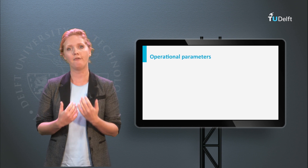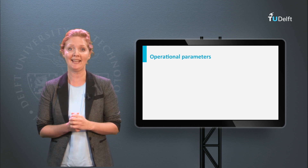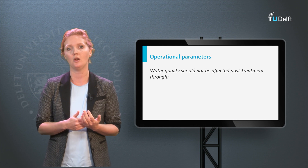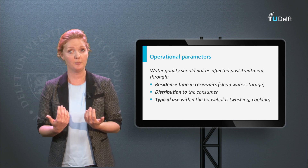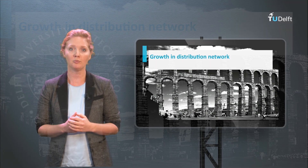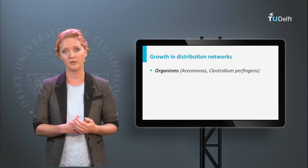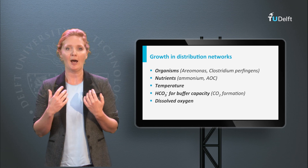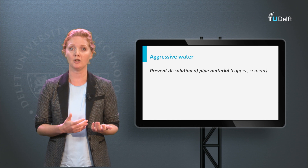Operational water quality parameters are very important for drinking water supply companies. The objective of these parameters is to assure that the water quality is maintained post-treatment — so the water quality should not change because of storage in reservoirs, distribution, or use within households such as heating. A distribution network can be an important source of contaminants as organisms may grow in it. Important parameters contributing to growth in distribution networks are the organisms themselves, but also nutrients, temperature, bicarbonate for buffer capacity, and dissolved oxygen. Apart from growth during distribution, dissolution of pipelines should also be prevented.